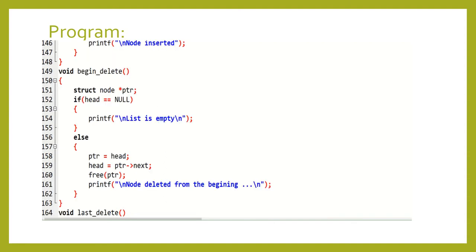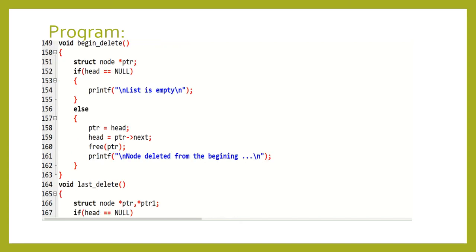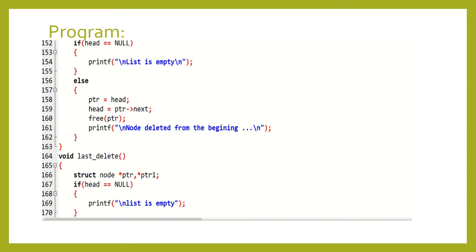For begin delete, if head equals null the list is empty and we cannot delete. Otherwise, 'ptr = head' since we are deleting from the beginning. Then 'head = ptr->next', 'free(ptr)' to delete the node, and it prints 'node deleted from the beginning'.